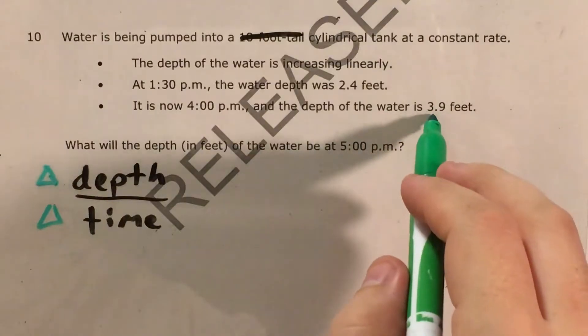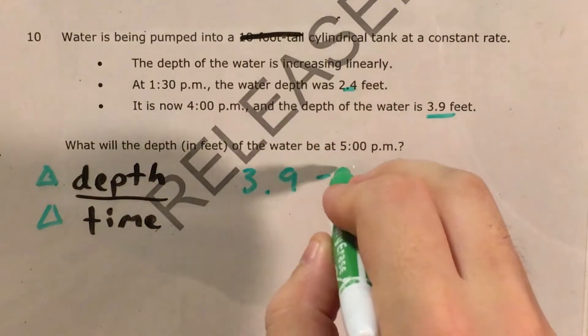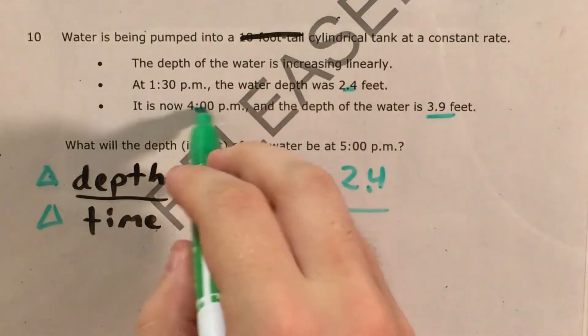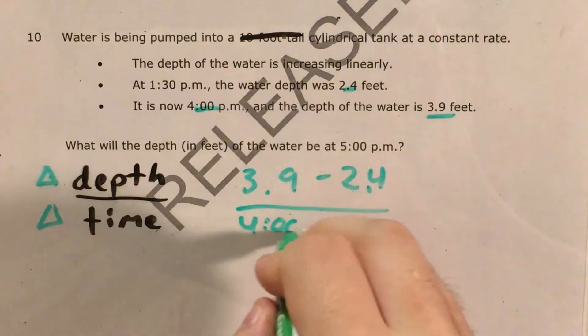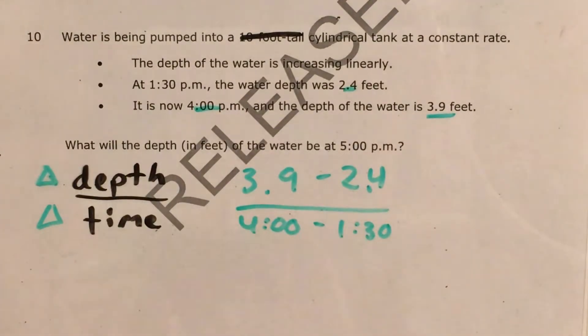So if I want to figure out the change in depth, I can take 3.9 and 2.4 and subtract that. And if I want to figure out the change in time, I can take 4 o'clock, subtract 1:30 from that. And so now I just need to do a quick bit of subtraction to figure this out.